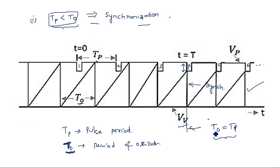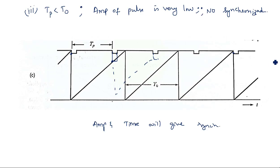This is about synchronization — synchronizing two different waveforms. Here we have seen a one-to-one relationship. In the next video I will explain about frequency division, where we will see one-to-two and one-to-three ratios so that frequency division occurs. Thank you.